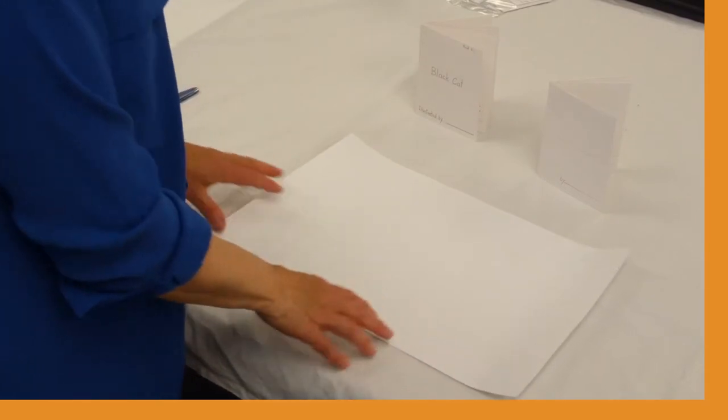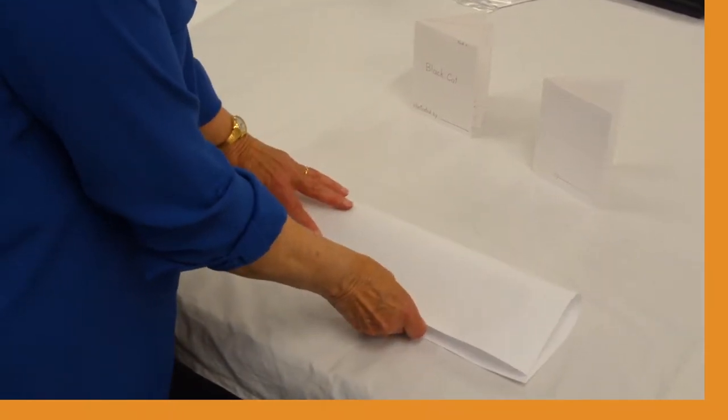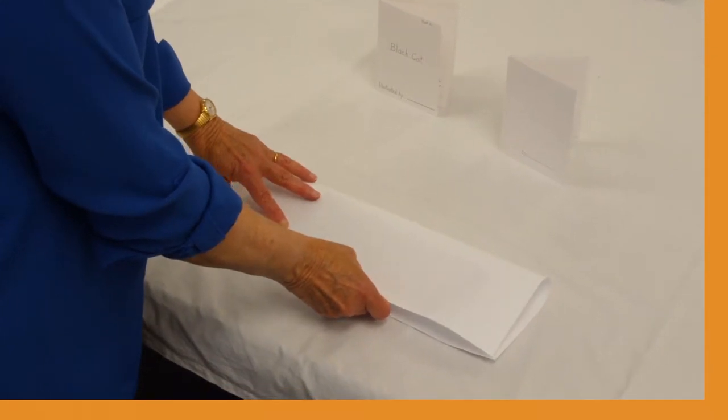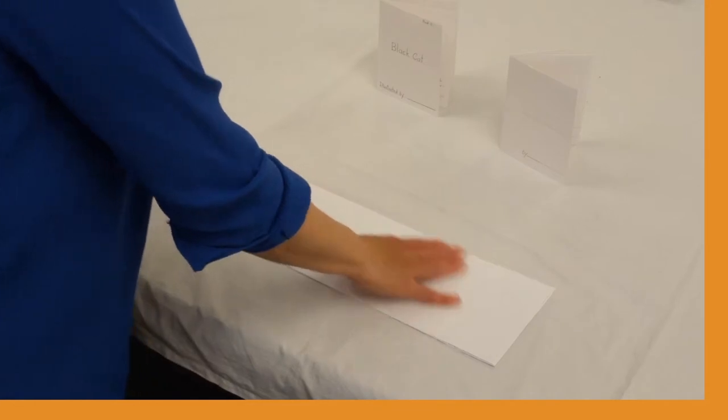This is an 11 by 17 sheet and we're going to make a book with no staples. This is an excellent way of getting kids to be story writers themselves. You fold it lengthwise the long way first.